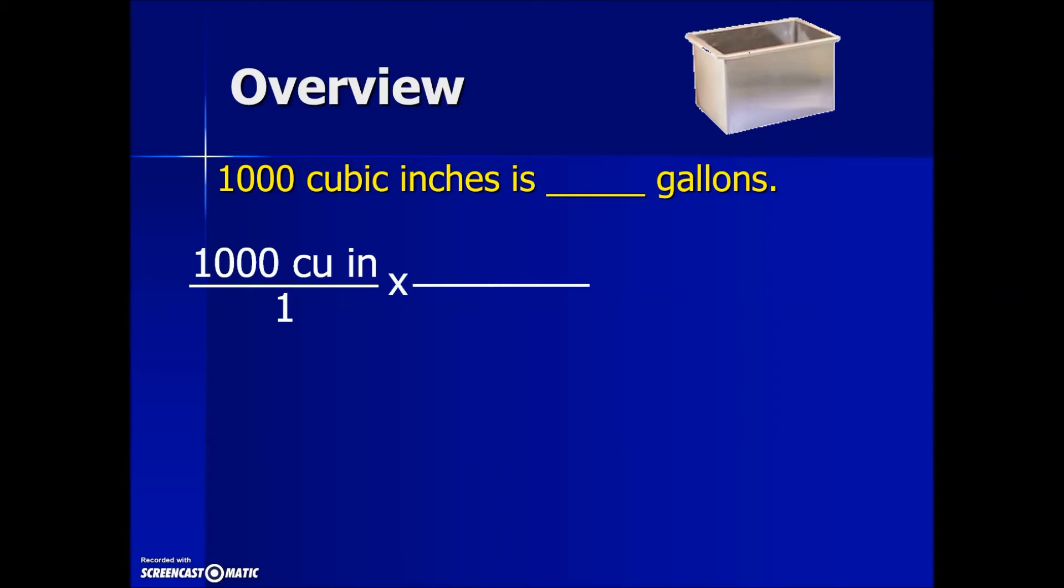Next we want to find a conversion factor that deals with cubic inches and gallons, and we want that cubic inches in the numerator to cancel out in the denominator. So we know right now on our conversion factor that hopefully ties these two quantities together that the cubic inches must be expressed in the denominator.